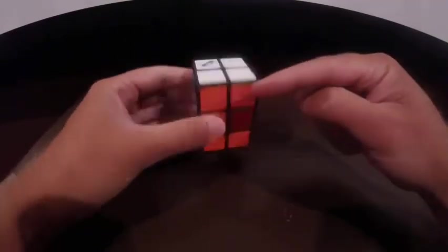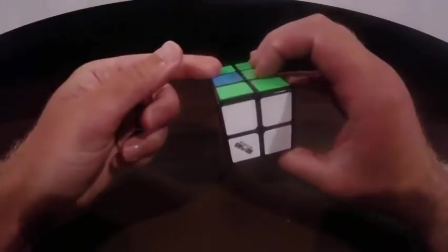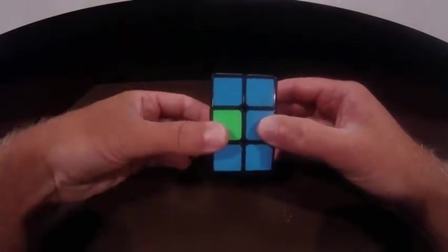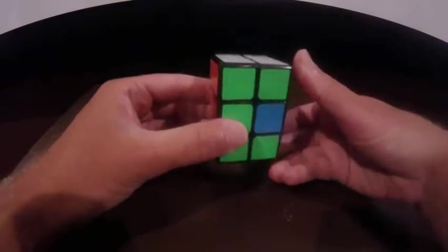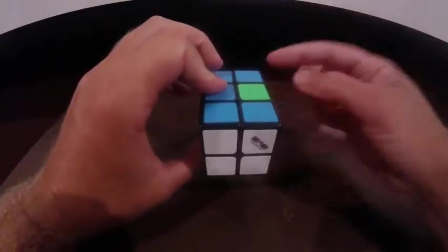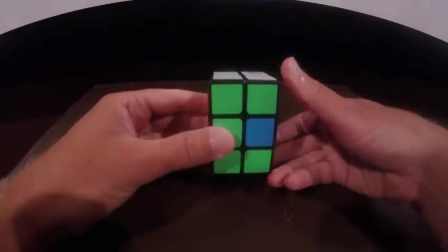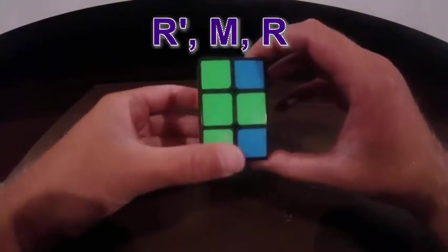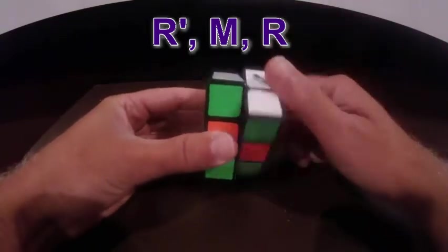Now, if I look here, is the orange over there? No. Okay, is the blue over there? It is. So I could do the same move over here. But I like to always look for the piece that's on the right. So I want to use the green. Okay, so what I'm going to do is right prime and then middle and then right.